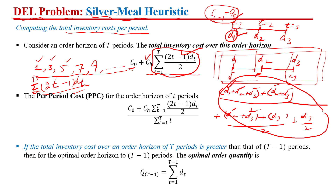This is the ordering cost, and this gives us the total inventory cost. To find the per period cost, we divide the total cost by the total number of time periods in the planning horizon.